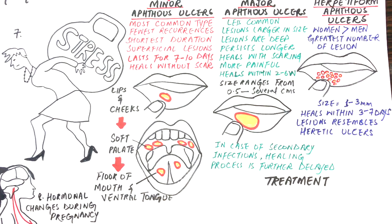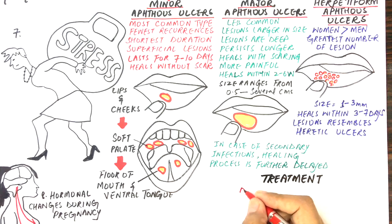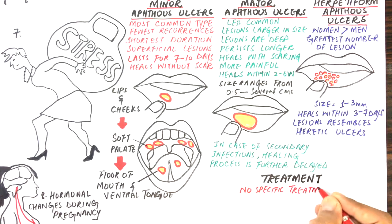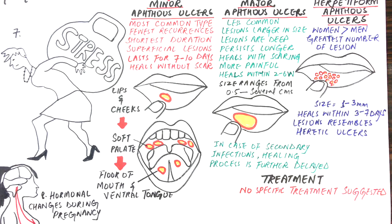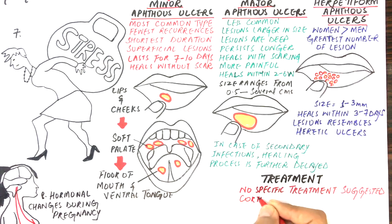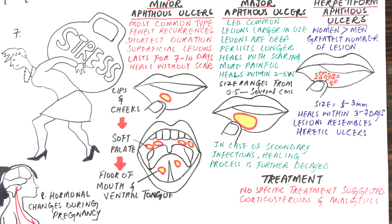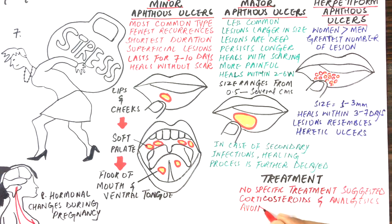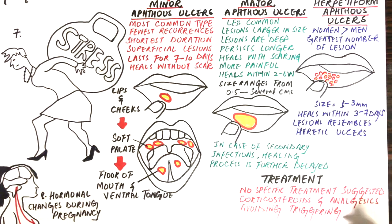There is no specific treatment suggested for aphthous ulcers. Symptoms like burning sensation and pain can be relieved with the use of corticosteroids and analgesics. Recurrences of the lesions can be reduced by identifying and avoiding the trigger agents.